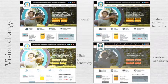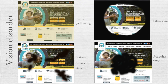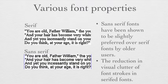Vision changes for older adults include problems with the ability to focus close up, high glare sensitivity, and low contrast sensitivity. Vision disorders may also include lens yellowing and macular problems, so they cannot see clearly in some spots of the visual field. Regarding font properties, serif fonts have been shown to be slightly preferred over sans-serif fonts by older adults because visual clutter is reduced.